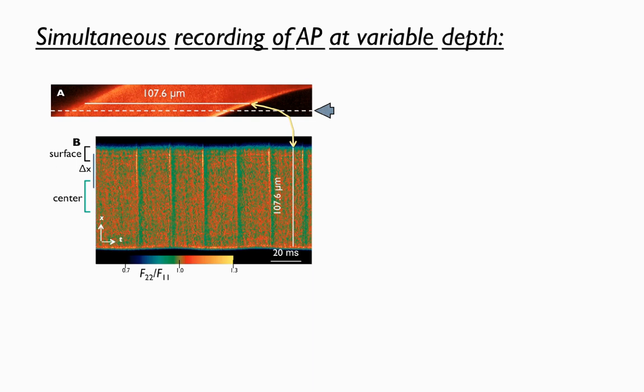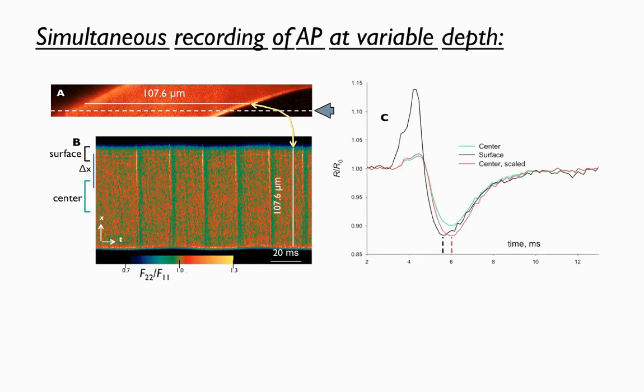The cell is stimulated periodically, and one can clearly see in green the large negative transients associated with each action potential. The curve in black in graph C is the ratio averaged in a region of the line scan near the cell surface, marked here with a black bracket in B. In green is the corresponding average near the center of the fiber, and in red is the same average after some rescaling to facilitate the comparison which shows a definite lag compared with the signal at the surface.